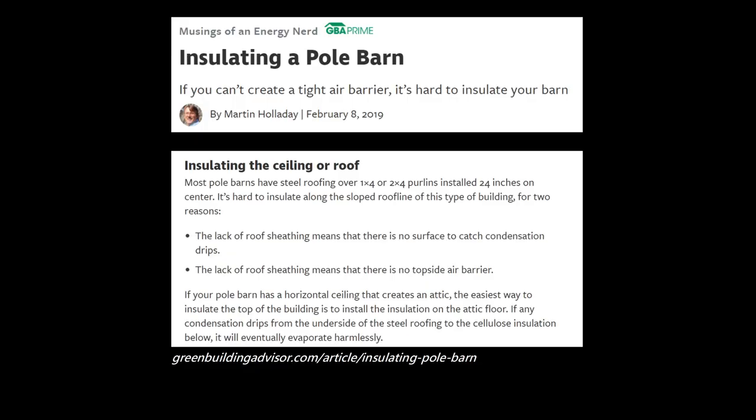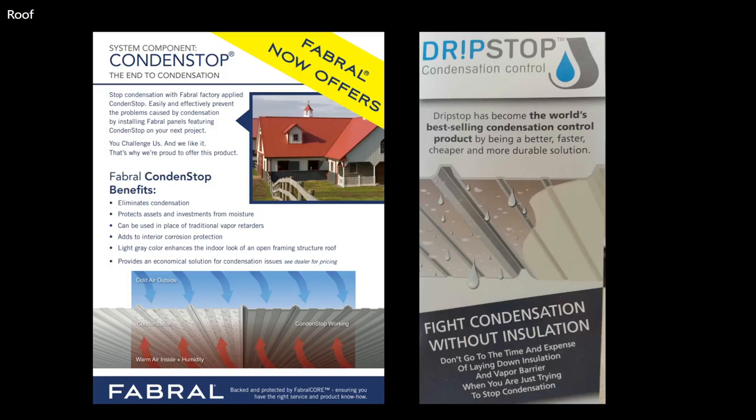Going into more details from Martin's article on ceilings and roofs: one unique element of post-frame is again the lack of sheathing, so you have to deal with condensation on the steel in a different way. The post-frame industry has developed a nylon fleece that comes pre-applied to ceiling or roof steel. As condensation forms it is held on the fleece and then harmlessly evaporates over time — a lot better than having drips in your attic.